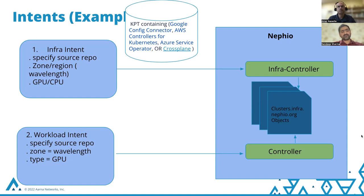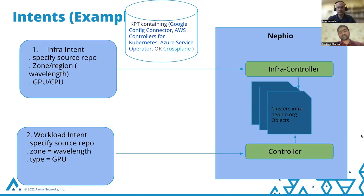Similarly for the workload intent at a high level, only two pieces of information are required. One is the placement intent, where the user can specify where they want to deploy the workload. The second is the source repo — where the raw packages are present — so that the controllers can download the packages from there, perform mutations, and upload them to the target repos via Porch.